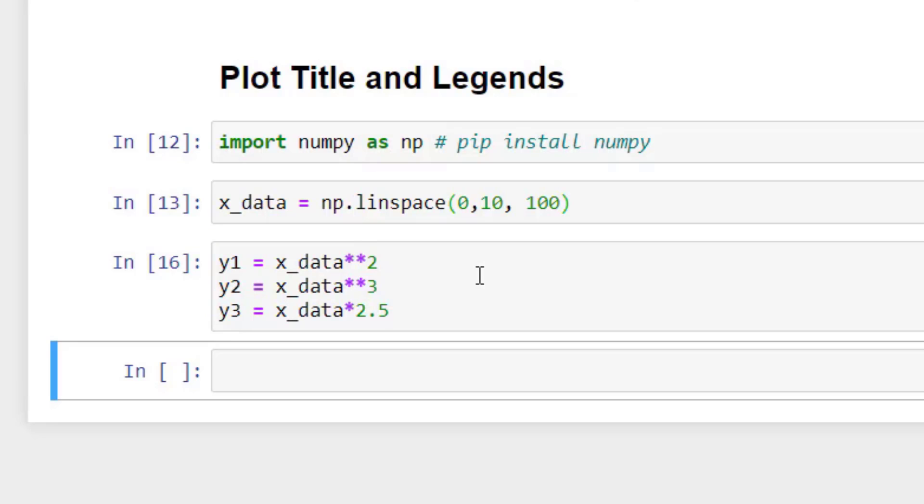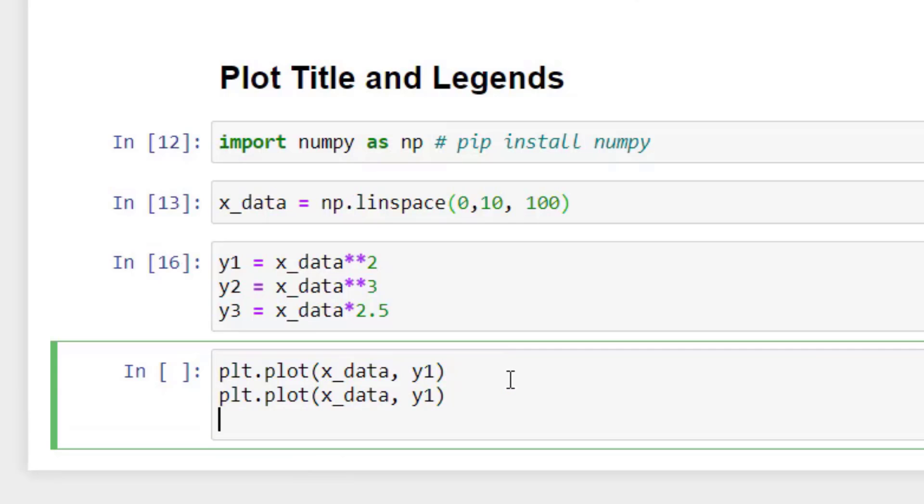So that y1, y2, y3 is also in the memory now. So we have x and 3 y's. So I'm going to plot all these three with respect to x. So how can I do that? Simple. plt.plot and then x data comma y1. This is the first plot. And I'll just copy, paste it three times and change it to y2 and y3.